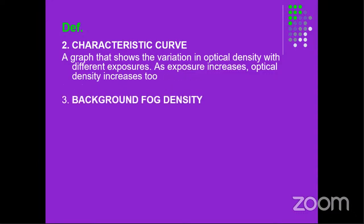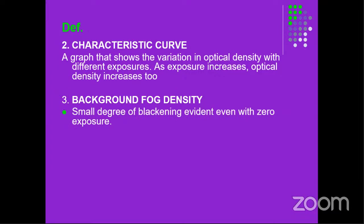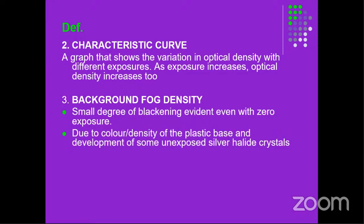There is something called background fog density. This is a small degree of blackening evident even with zero exposure. Even before you take a radiograph, a film — even when new — can show a small degree of blackening. This is due to the color or density of the plastic base and also development of some unexposed silver halide crystals. If films are not stored properly and get exposed to light, the edges start to darken. Background fog density should be less than 0.2.